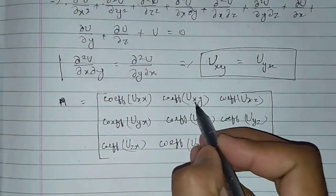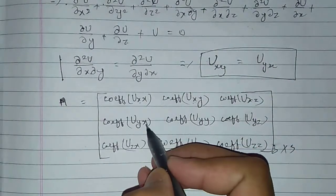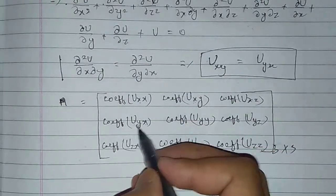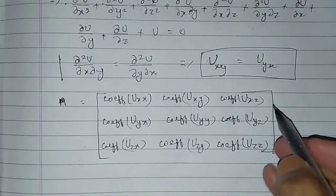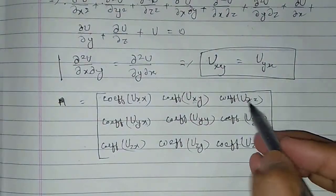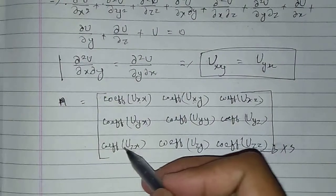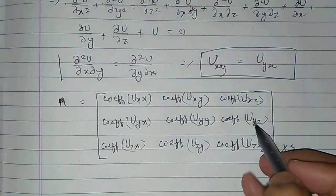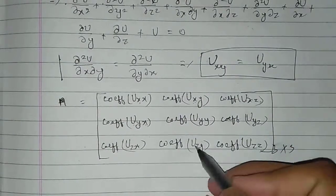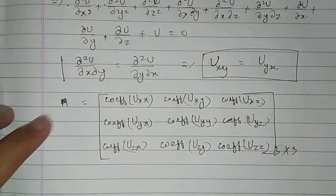This matrix A is of symmetric form because u_xy equals u_yx so both corresponding entries are equal, u_xz equals u_zx so both entries are equal, and similarly u_yz equals u_zy. So this is a symmetric matrix.